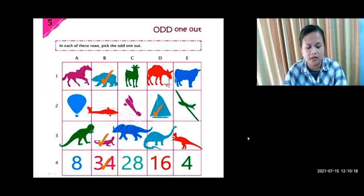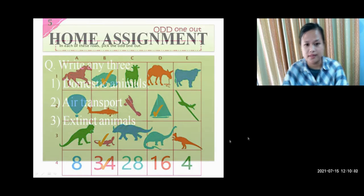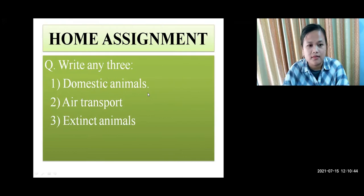Number 4: it is digits, that is 8, 34, 28, 16, and 4. The difference in these numbers is that the other four except 34 are all divisible by 4. That is 4×2 is 8, 4×7 is 28, 4×4 is 16, and 4×1 is 4. So 34 is not divisible by 4. That's all.